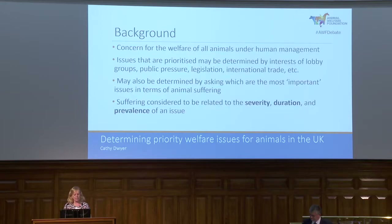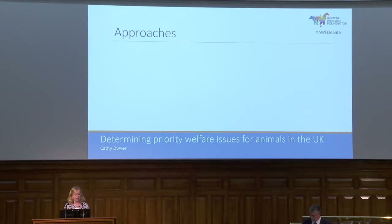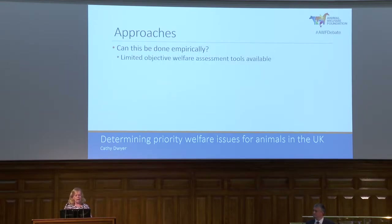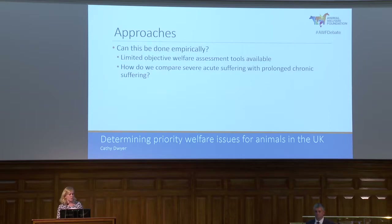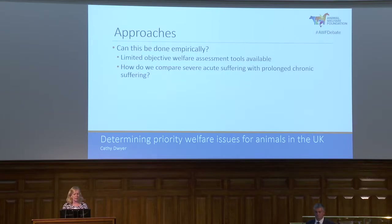It is quite a complex issue to think about how we would prioritise these things. One question is: can this be done empirically? Do we have evidence that allows us to weigh these different issues? We know there are limited objective welfare assessment tools available. There are also philosophical difficulties in comparing severe acute suffering with a prolonged chronic condition — greater severity on one hand, but longer duration on the other — and we lack empirical evidence to resolve this.